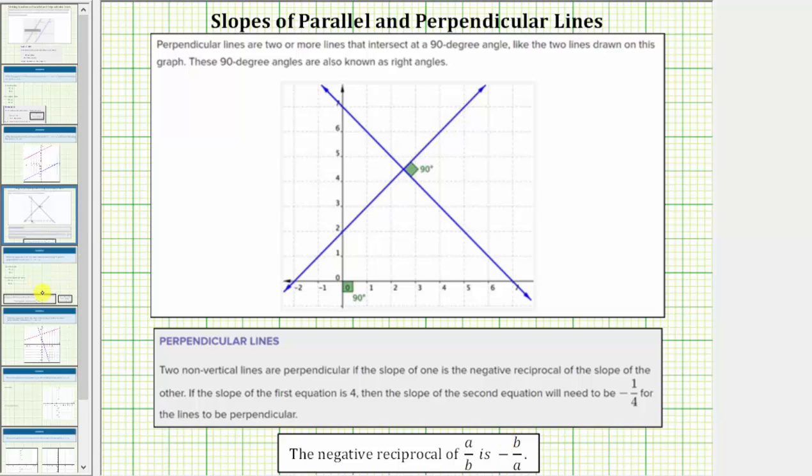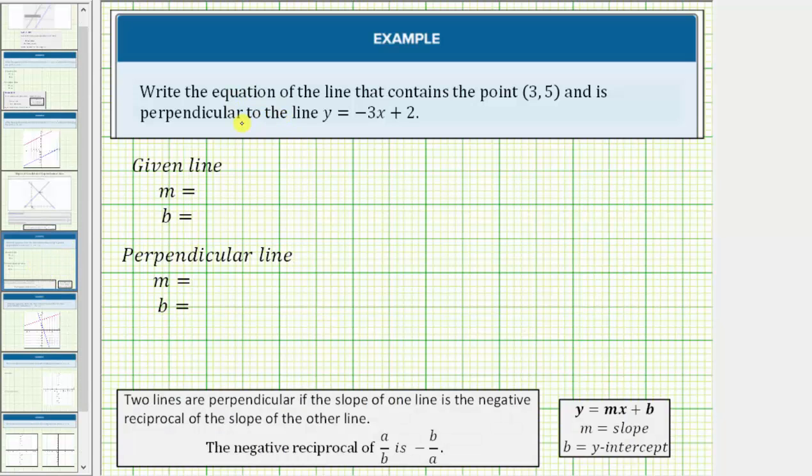Going back to our example, notice the given equation is in slope-intercept form, y = mx + b. We can tell the given line has a slope of -3 and a y-intercept of 2. So we know m = -3 and b = 2.